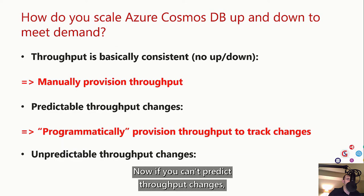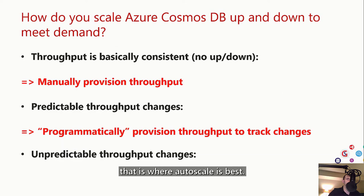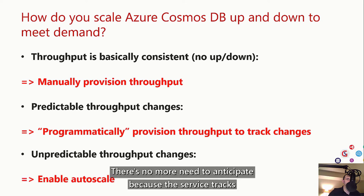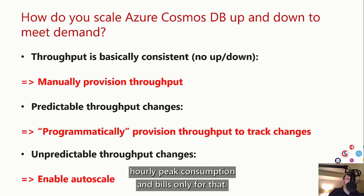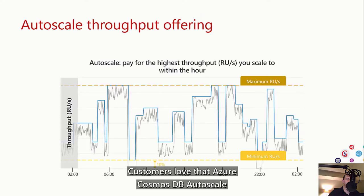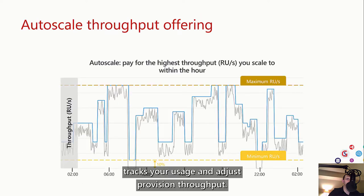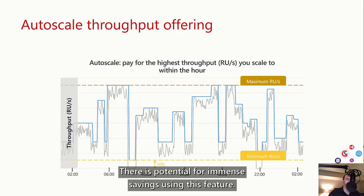If you can't predict throughput changes, that is where autoscale is best. There's no more need to anticipate because the service tracks hourly peak consumption and bills only for that. Customers love that Azure Cosmos DB Autoscale tracks your usage and adjusts provisioned throughput — by design, there's no latency or overshoot in the process. There is potential for immense savings using this feature.